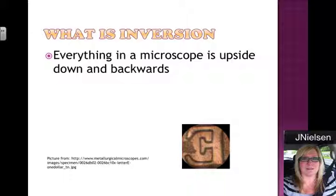Inversion is what happens when we look at something in a microscope — everything in a microscope is upside down and backwards. For example, the letter E from a piece of newspaper: when we look at it normally, it's going in the right direction and it's right side up. When we put it under a microscope slide and look at it, it is upside down and backwards. And that's all I'm going to cover tonight — I'll see you tomorrow.